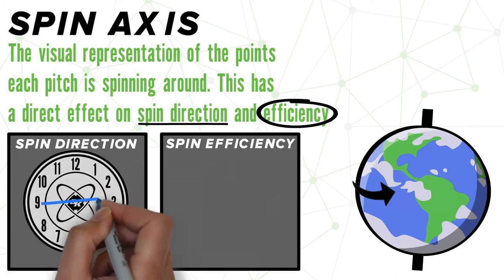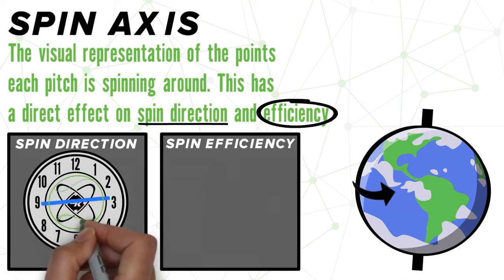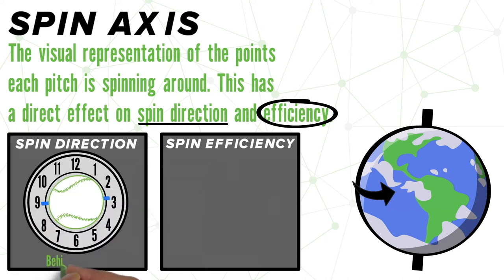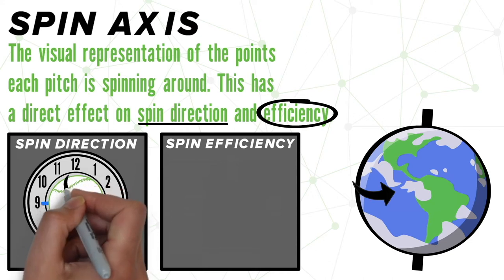Spin direction is the measure of how each pitch is spinning, viewed from behind the baseball. This is often displayed as time on the clock. Our blue line here will represent our spin axis. Our spin direction will always fall at 90 degrees from that line.